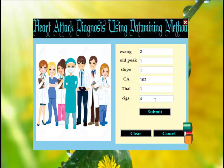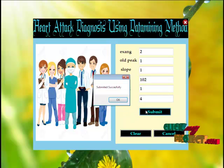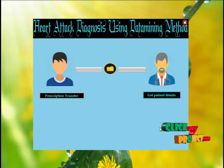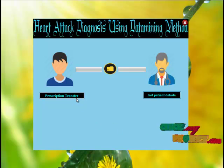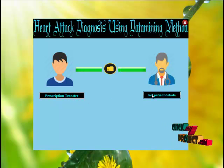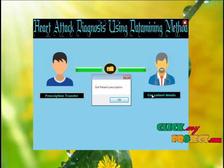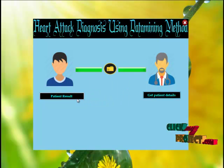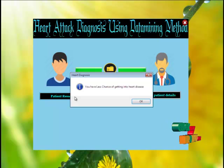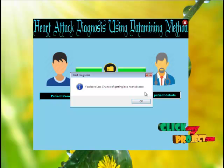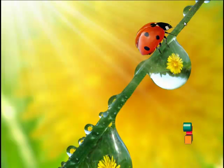Click the submit button. This form shows how results are obtained using data mining. The user's submitted prescription will be sent to the admin. Admin gets the patient prescription and analyzes it with the classification data. To know the patient result, the patient has to check the patient result section. This patient has a less chance of getting heart disease. From this, the project is concluded.